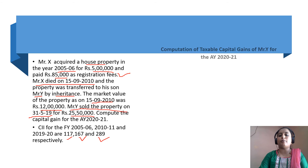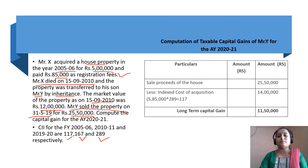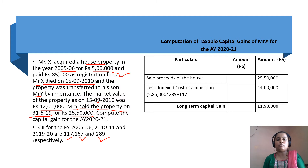Let us see how to compute the taxable capital gain of Mr. Y. As Mr. X was died, we are now calculating this capital gain for Mr. Y. Here the first thing — it is a long-term capital gain because it was purchased in 2005-06 and now it is sold in 2019. So, it is a long-term capital gain.